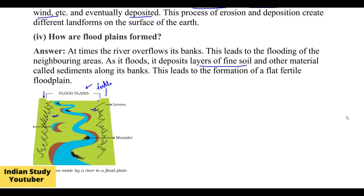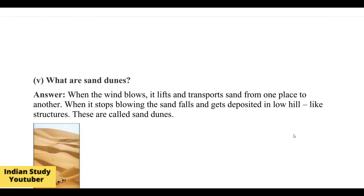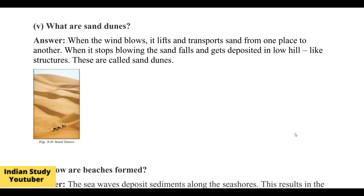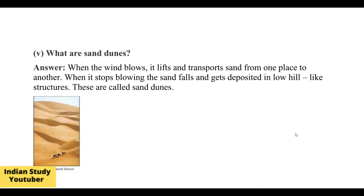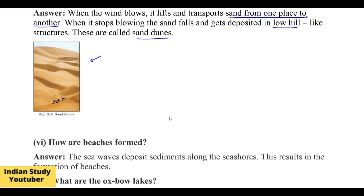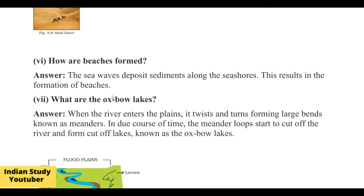What are sand dunes? When wind flows, it carries sand from one place to another. When the sand is deposited, small mountain-like structures are formed, which we call sand dunes. If you go to Rajasthan, you will see many of them — basically sand moved from one place to another by wind.